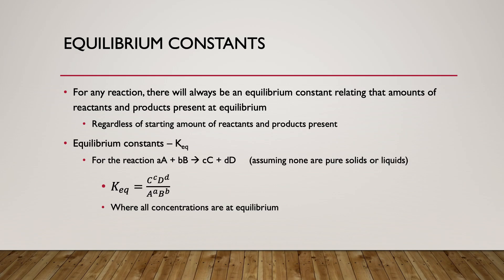To look at how we calculate the equilibrium constant: this is a capital K, as opposed to the lowercase k used for rate constants in kinetics. You'll sometimes see a C or P subscript — KC or KP — indicating whether you're using concentrations or pressures for the equilibrium constant.